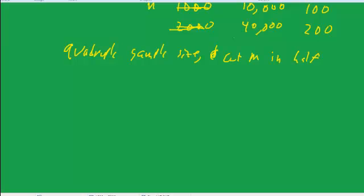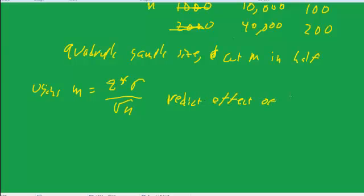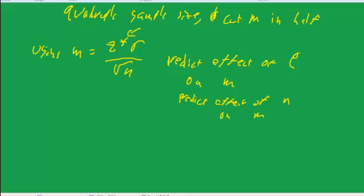We don't get exactly that result with a small sample of continuous data because the degrees of freedom are affected by sample size, altering t-star as well — but that's a minor effect. The point is we can use this equation to predict the effect of the confidence level on the margin of error, since confidence level drives z-star or t-star, and we can also predict the effect of the sample size on the margin of error.